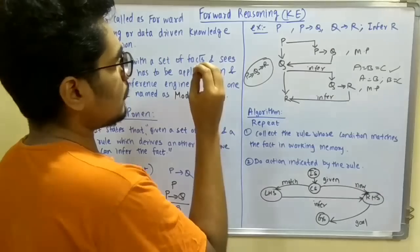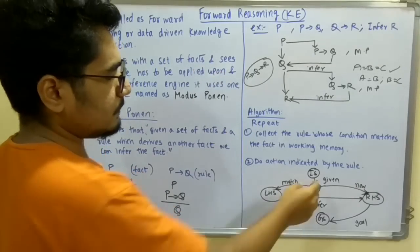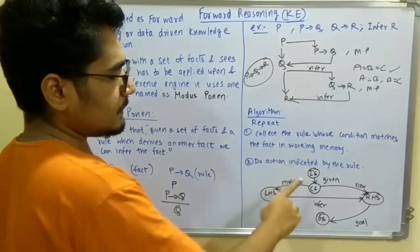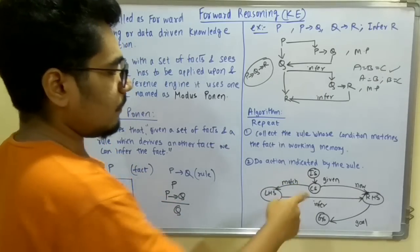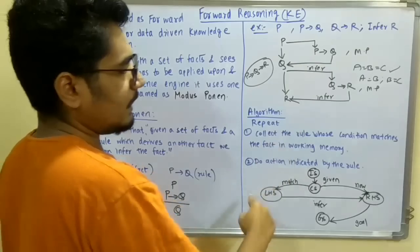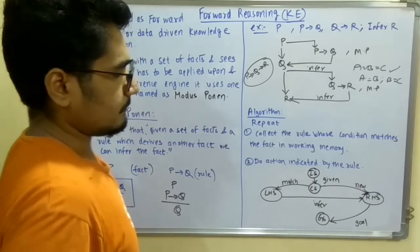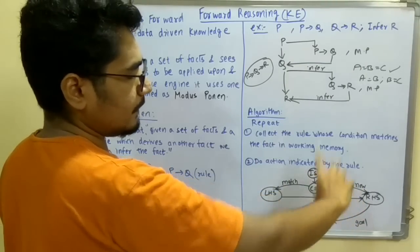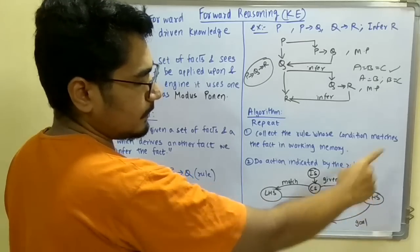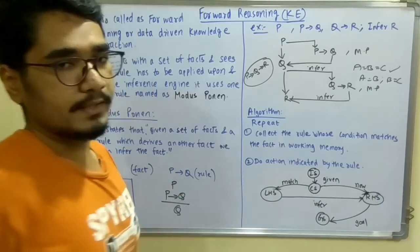There is a state diagram for representing this knowledge extraction. First, you have the initial state, and from the initial state you have a condition check. If there is a match found, it will go to the left-hand side and infer your goal state. If there is a new fact or a new rule, it will directly go to the right-hand side and derive the goal.